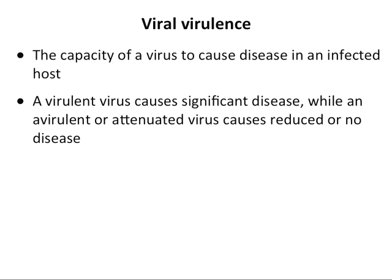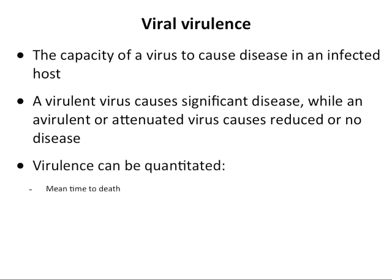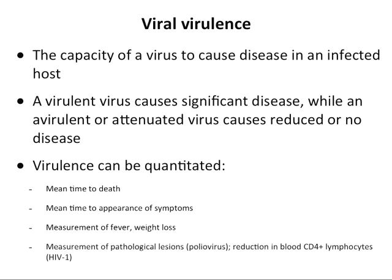Virulence is a relative term, and we can measure it in a variety of ways. You could measure the mean time to death if you're infecting an experimental animal with a virus, or the mean time to symptoms, fever, weight loss, or the measurement of lesions caused by the virus. For example, poliovirus, if you inject it into an animal, will cause destruction of motor neurons, and you can see these lesions in the brain and spinal cord. HIV infection causes a reduction in CD4-positive lymphocytes in the blood, which you can measure by drawing blood.